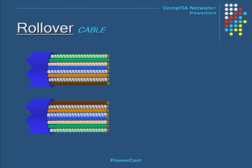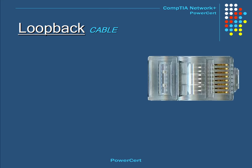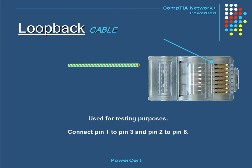A rollover cable is created when both ends are wired completely opposite of each other. These are used to connect a computer or terminal to a router's console port. A loopback cable is for testing purposes — it makes a computer think it's connected to a network. To make a loopback cable, you connect pin 1 to pin 3 and pin 2 to pin 6.